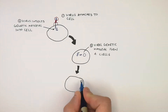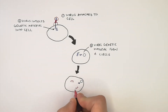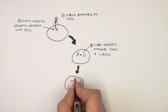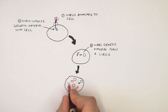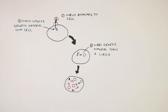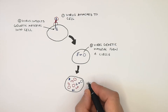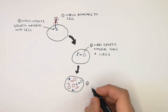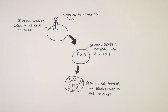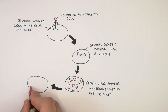Inside the cell, the genetic material from the virus is going to be used to form new viral proteins and viral genetic material. As you can see here, it is forming new parts for new viruses — new viral genetic material and proteins are produced inside the cell.